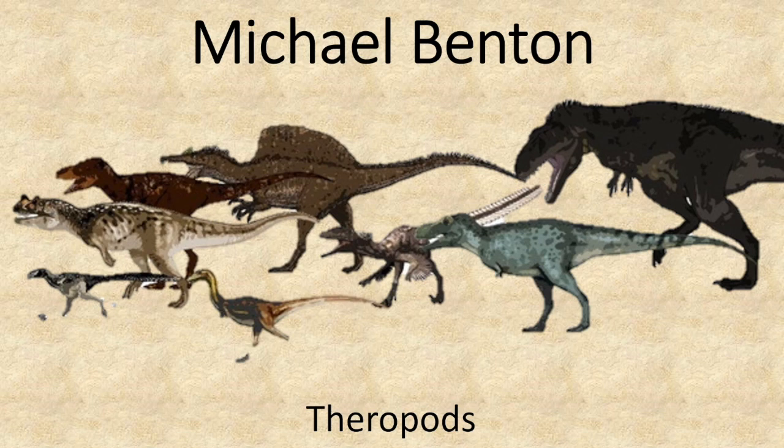Michael Benton shook up the classification of dinosaurs with a new way of interpreting evidence from dinosaur fossils. He suggested that theropods should actually be in the Ornithischia group due to a more recent discovery examining hip shape, making it more bird-like than lizard-like.